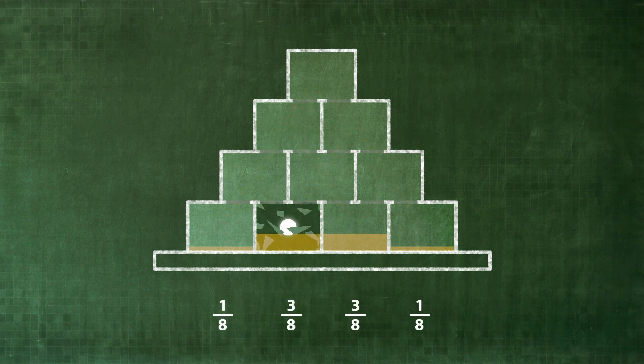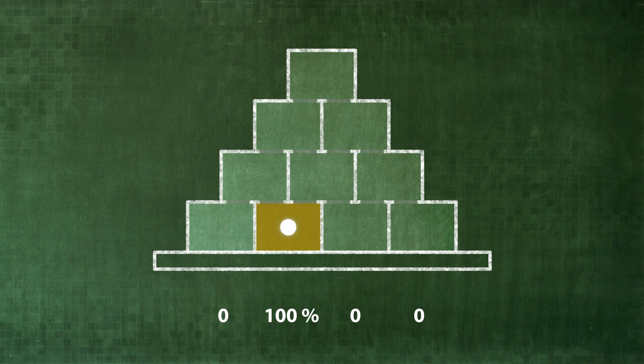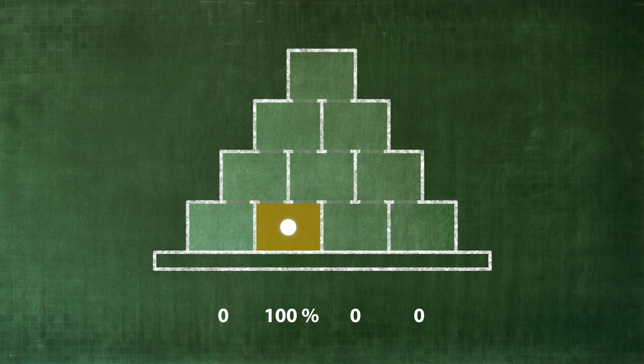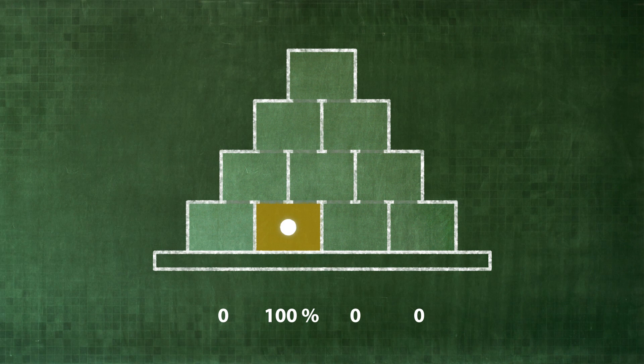Next, we open a box and thus perform a measurement. The ball has been located. The probability for that box becomes 100%. For all other boxes, the probabilities immediately drop to zero, independent of spatial distances.